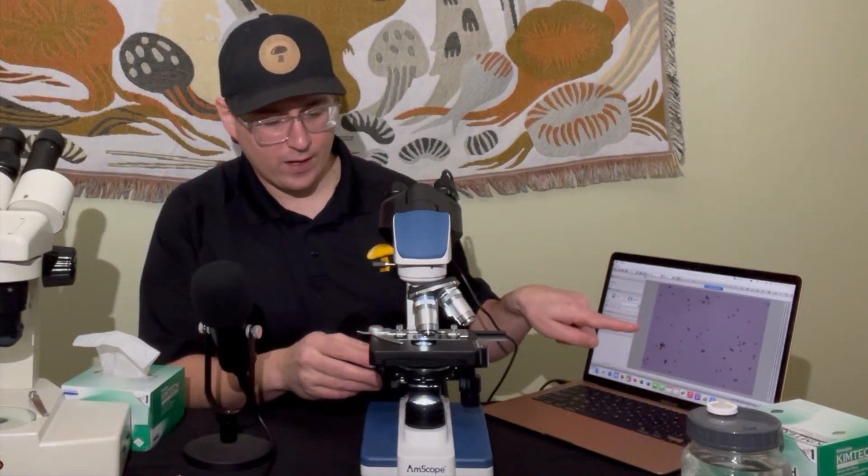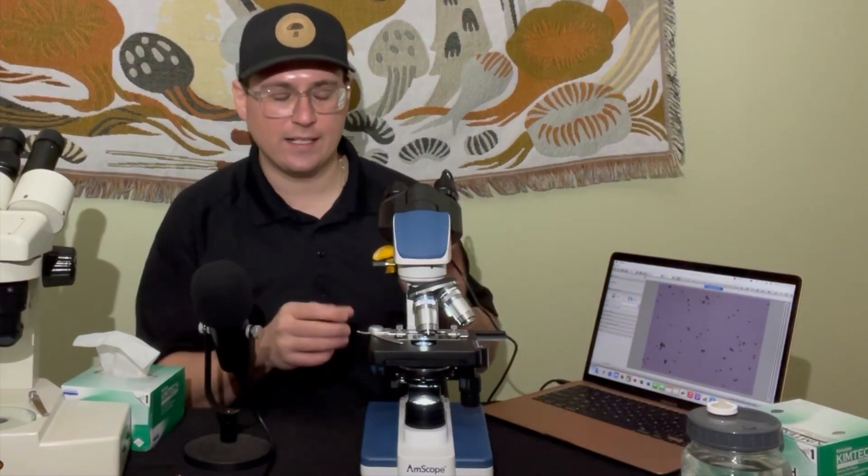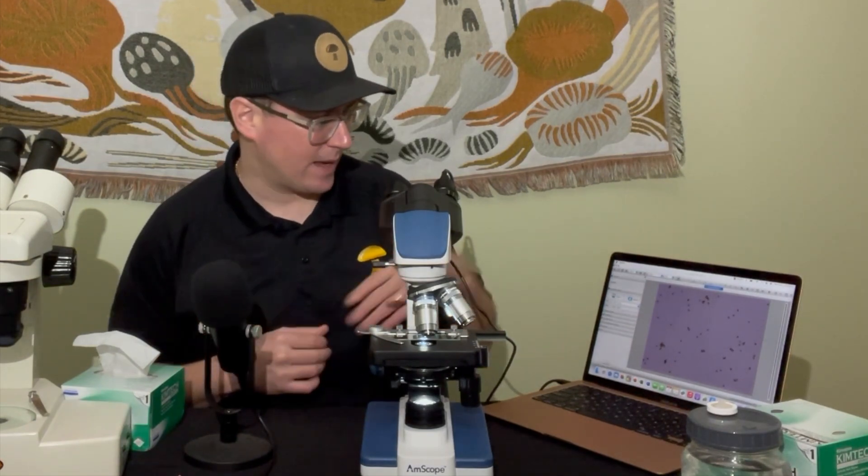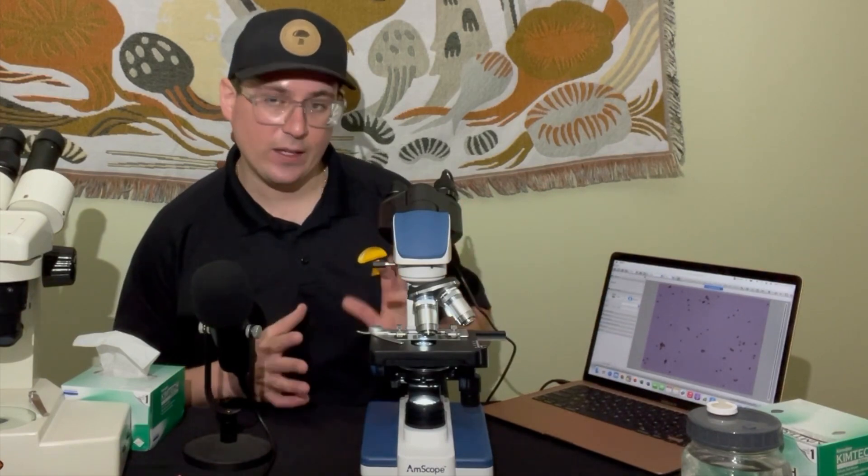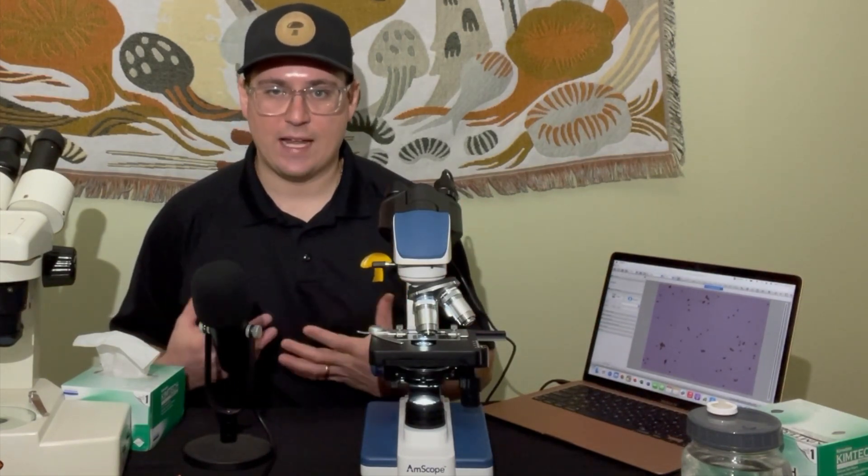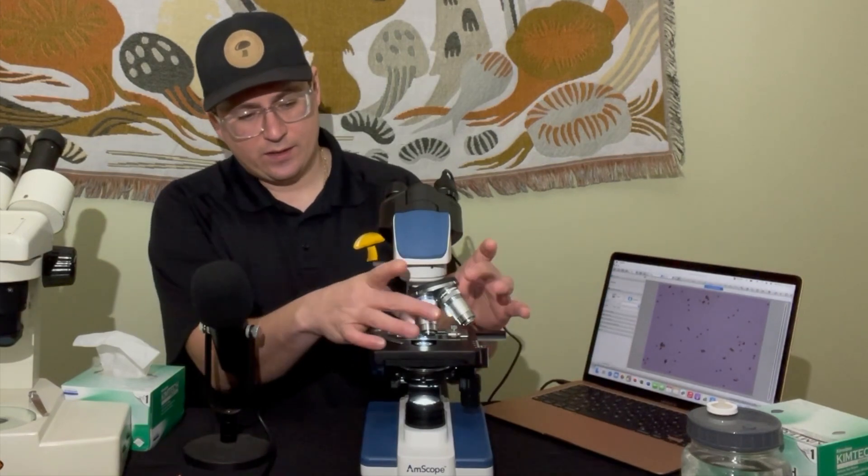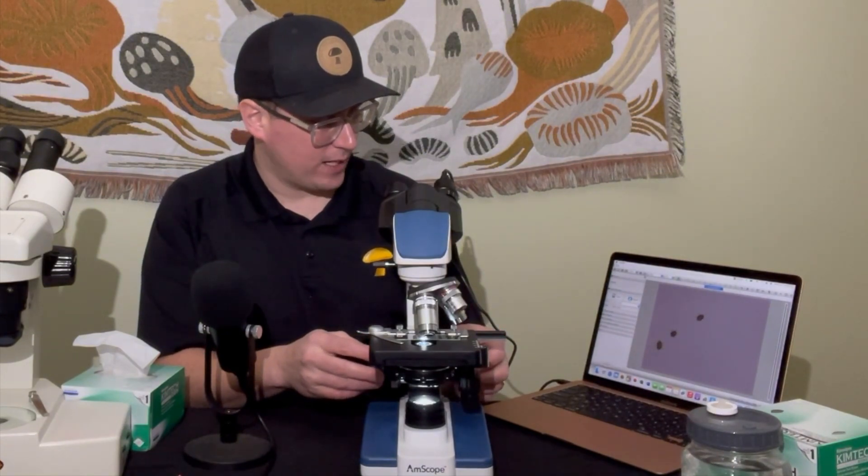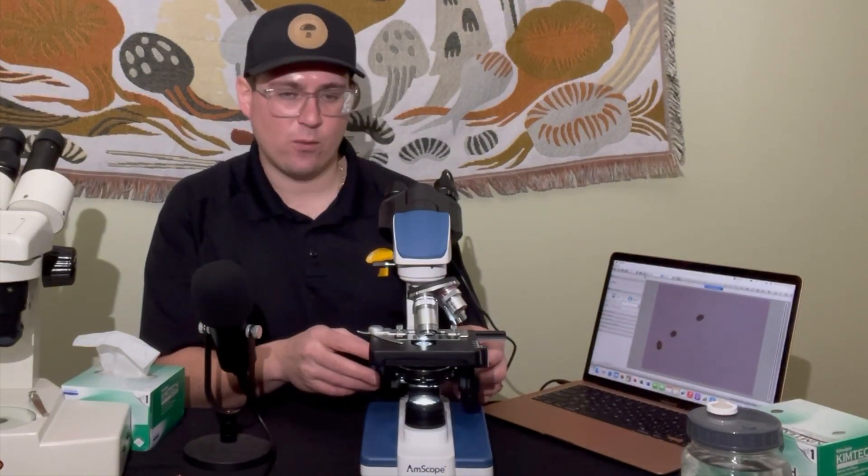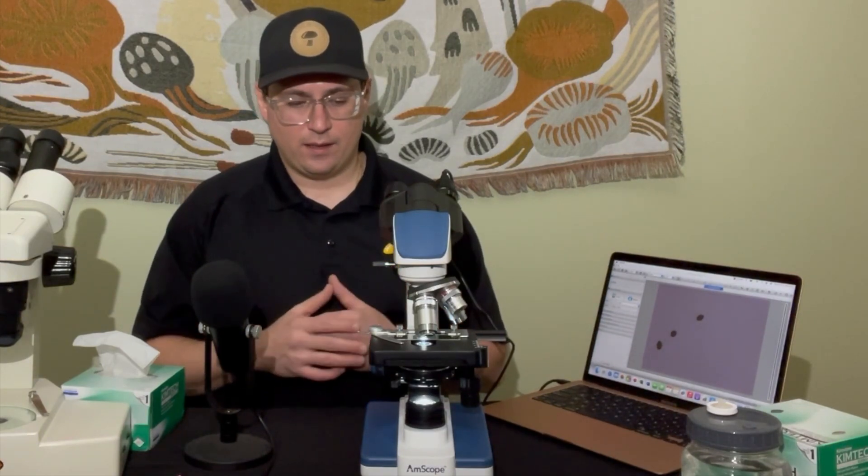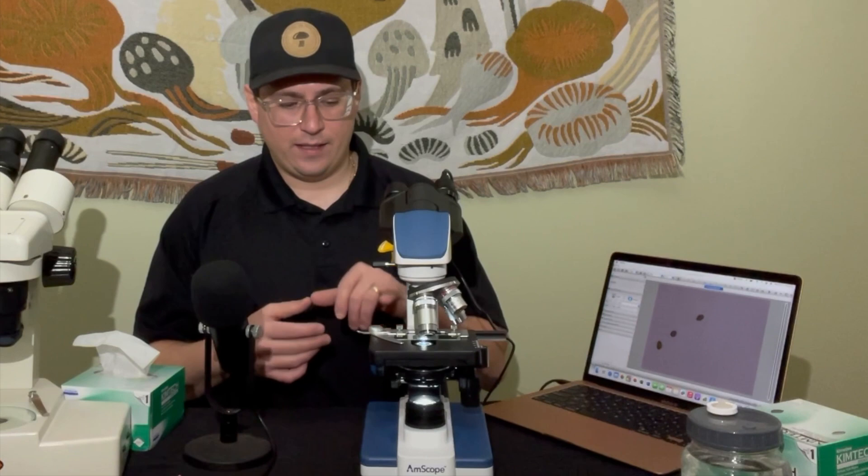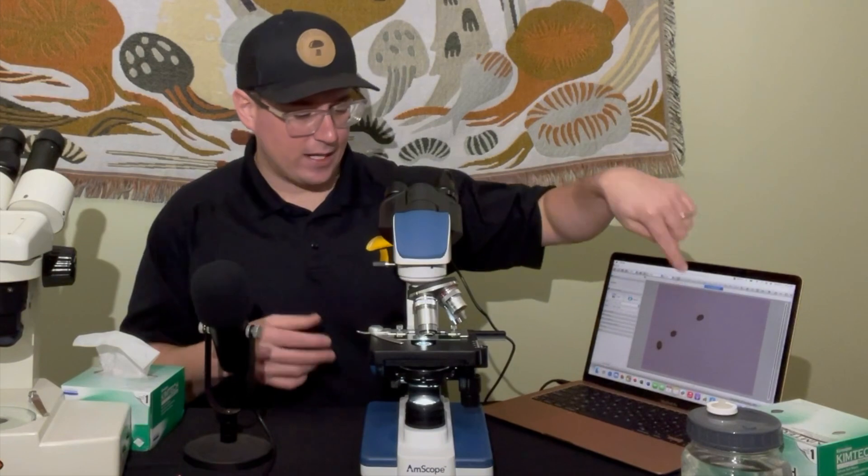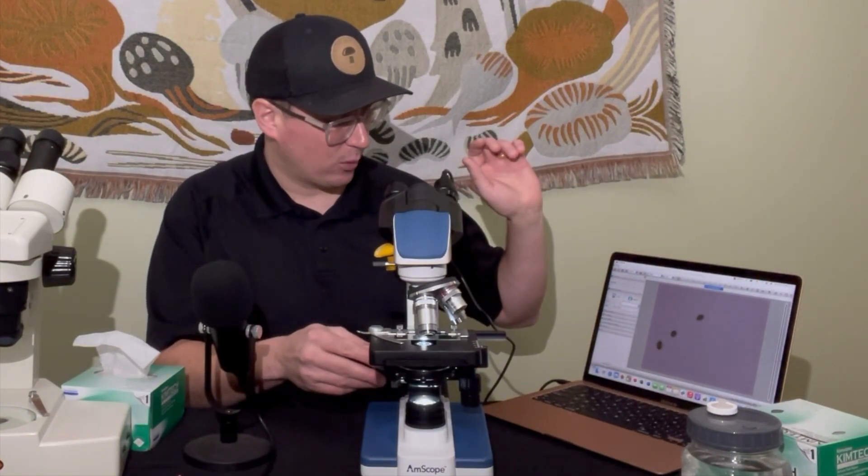Now this microscope's really nice because it should be calibrated so that as you increase your objectives you shouldn't have to focus too much. So now we're on the 10x objective. So we have a 10x and a 10x, so that's a hundred times magnification and you can see the spores really clearly. However, if you want to be the most accurate as possible, it's good to go one step further and we will go all the way to the 40x lens.